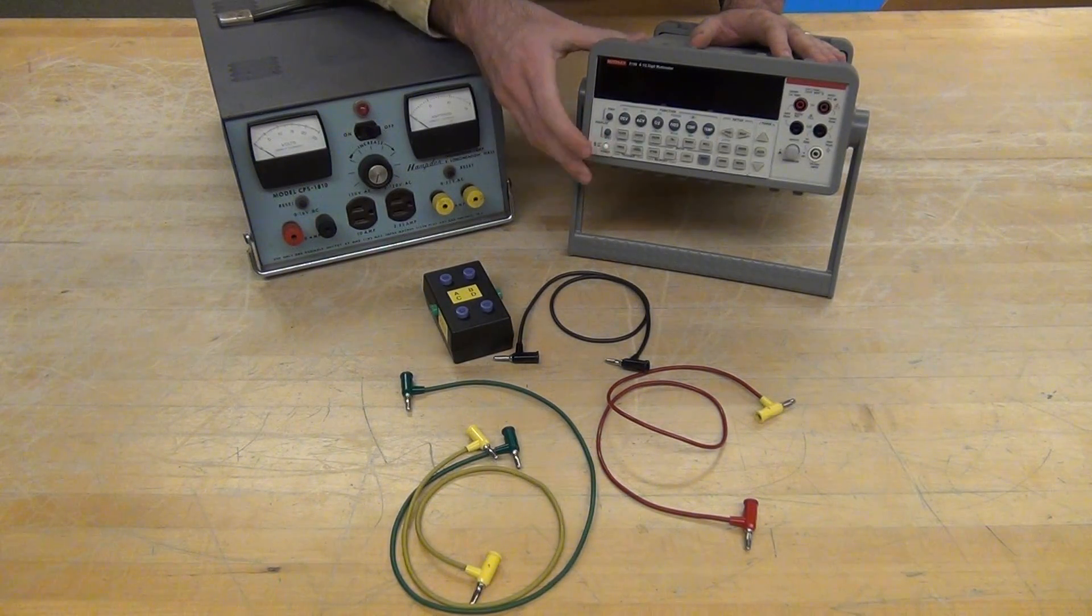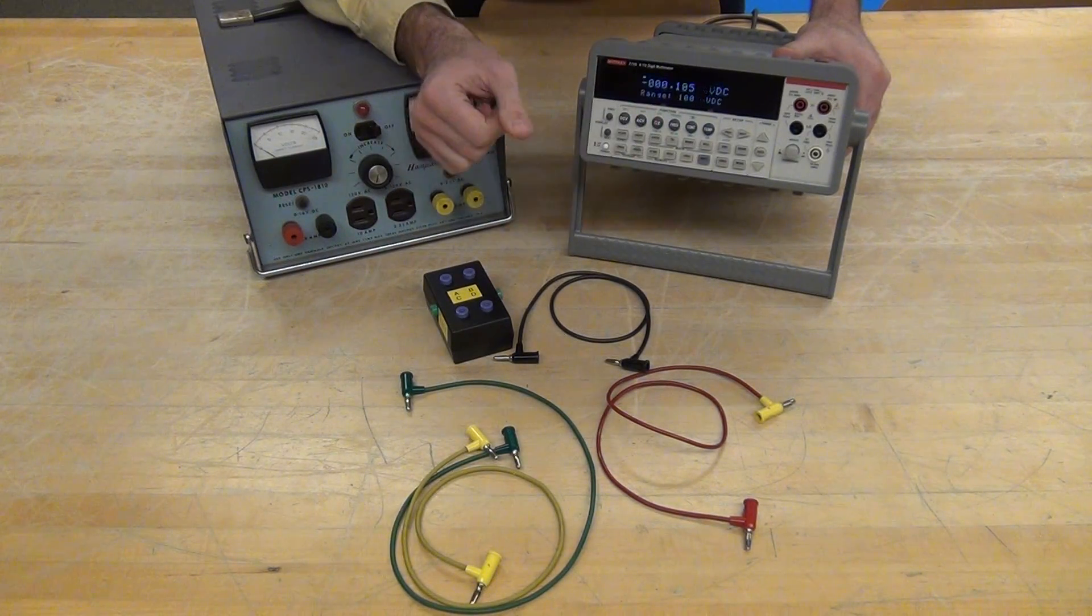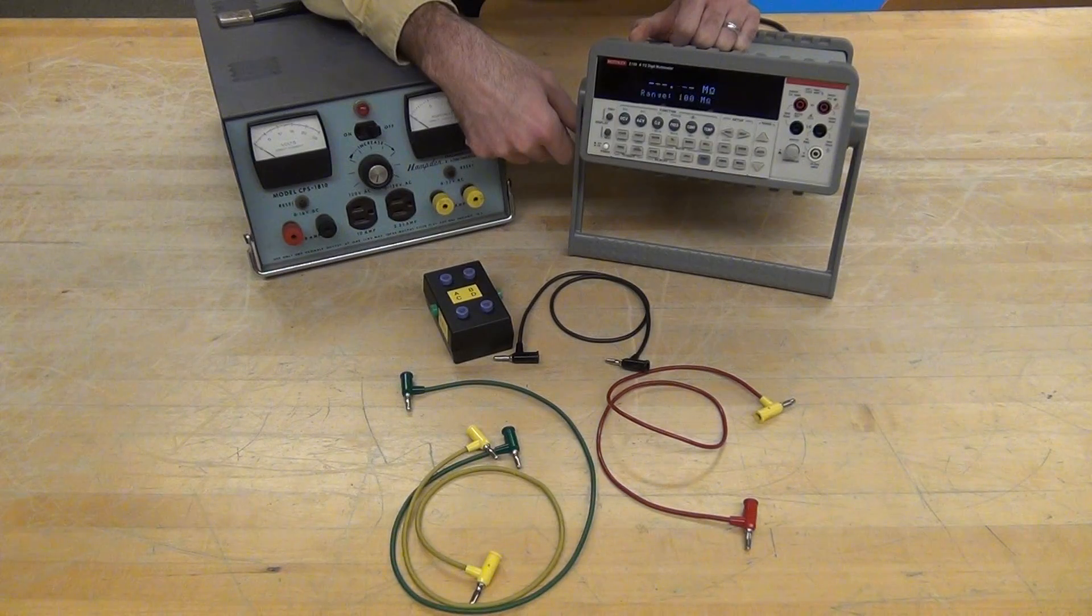What they can do. The Keithley is very versatile. It can be both an ohmmeter, something that measures resistance by pressing the ohm symbol.